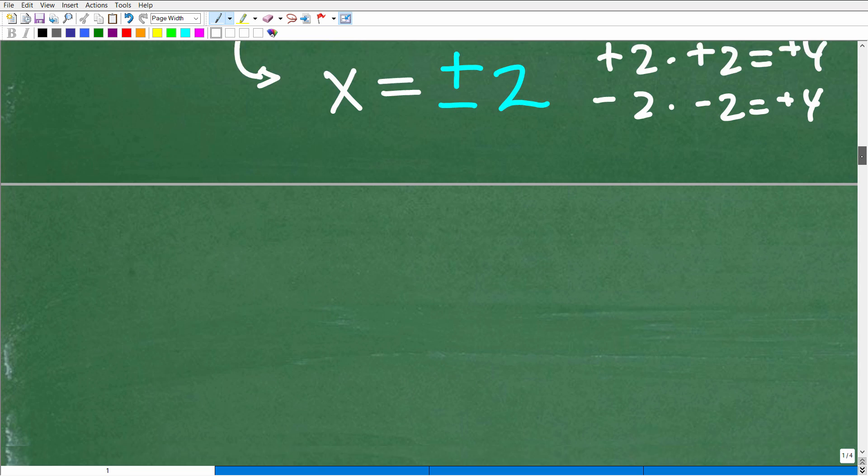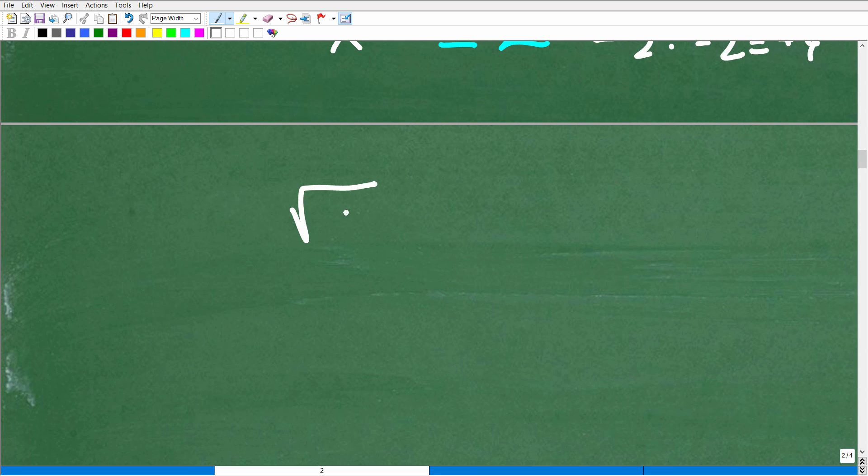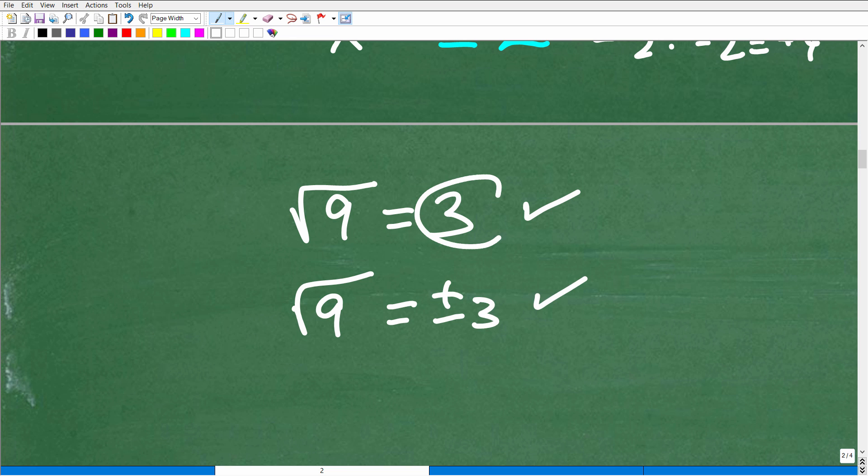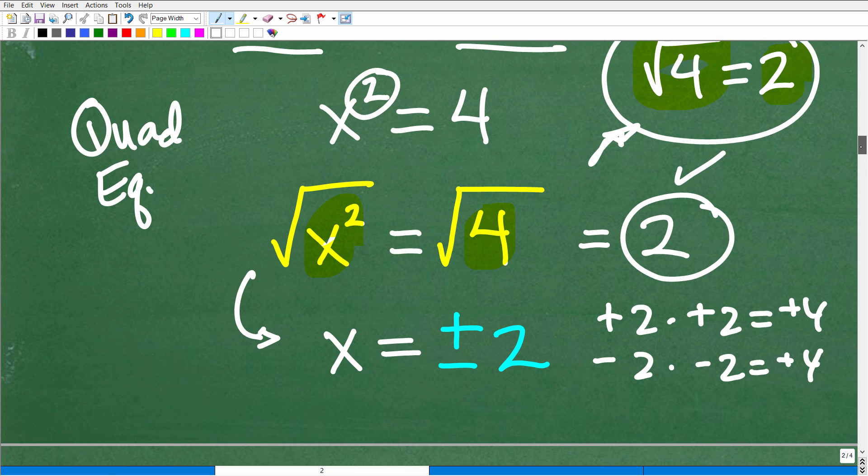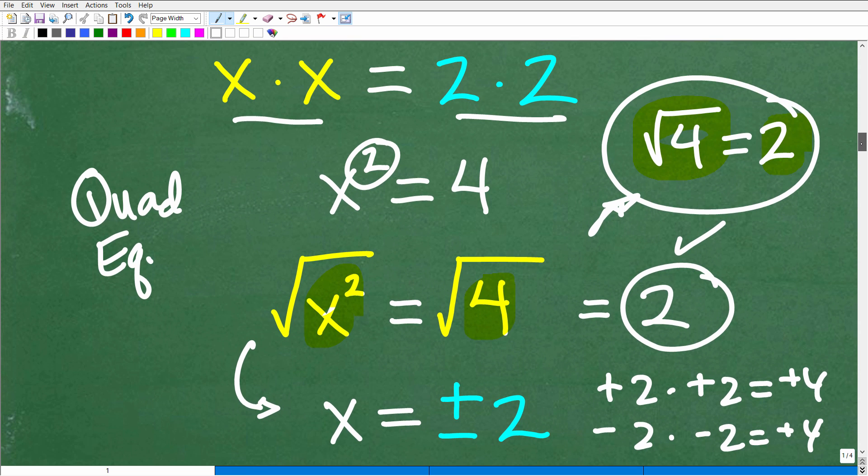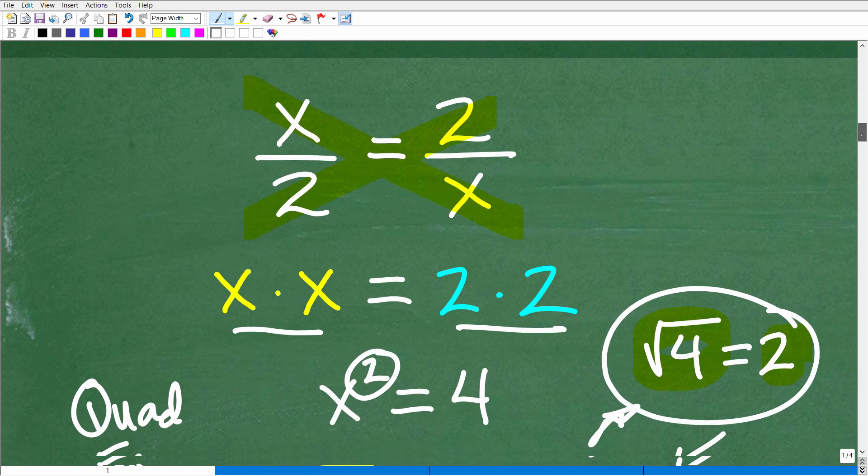Because positive 2 times positive 2 is positive 4, and negative 2 times negative 2 is also positive 4. Two solutions to this equation. If you were given the square root of 9 and you said 3, that would be perfectly fine. Some teachers, if you said positive negative 3, would still give you full credit. But what we're looking for in these type of problems is typically the principal square root. Positive and negative 2 is the solutions.